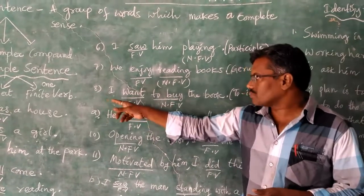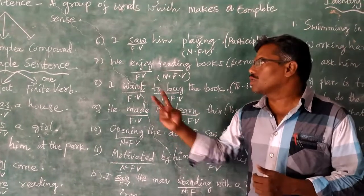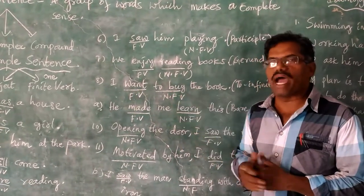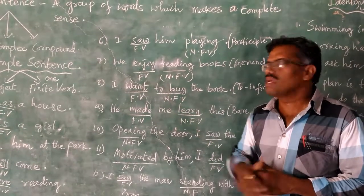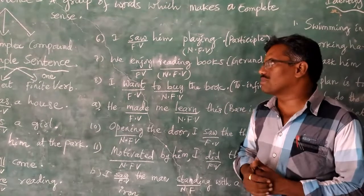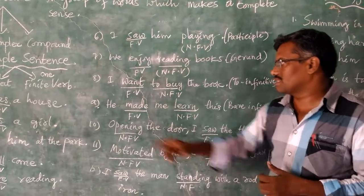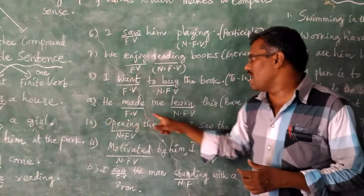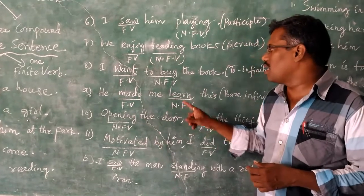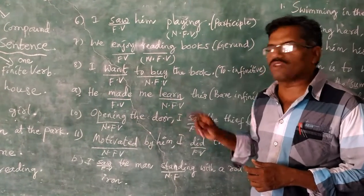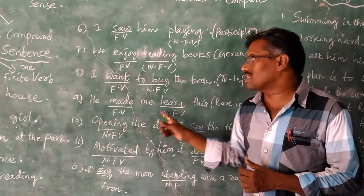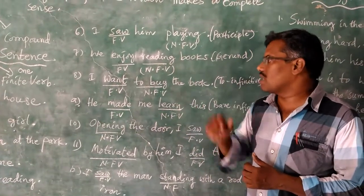Look at this one: 'I want to buy the book.' Here also, two verb forms are there — 'want' and 'to buy.' 'To buy' is the non-finite verb and 'want' is the finite verb. As there is only one finite verb, it is also called a simple sentence. Next: 'He made me learn this.' Here, 'made' is the finite verb and 'learn' is the non-finite verb. As the sentence has only one finite verb, this sentence is also called a simple sentence.